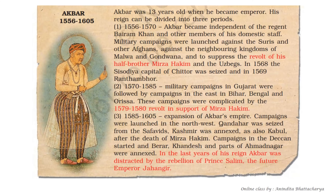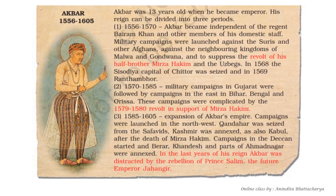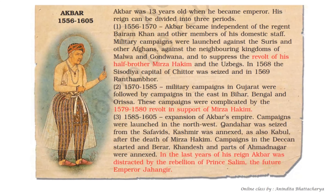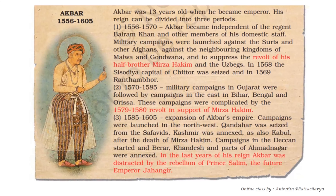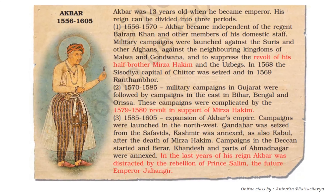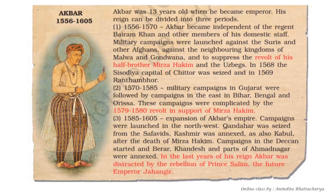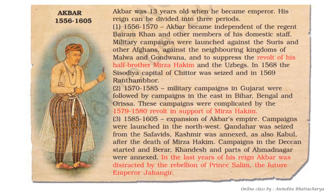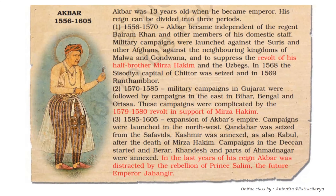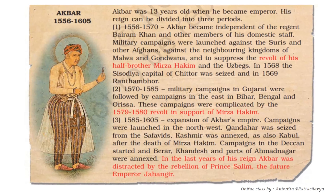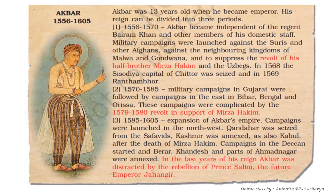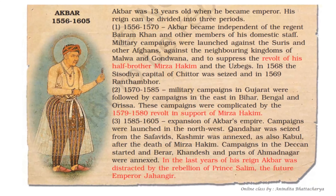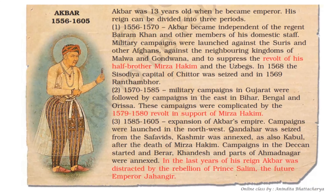Akbar was the most powerful and famous emperor of the Mughal Empire. He was only 13 years old when he became emperor. His era can be divided into three periods: 1556 to 1570, 1570 to 1585, and 1585 to 1605. During 1556 to 1570, under the guidance of Bairam Khan and other members of his domestic staff, many military campaigns were launched against the Suris, Afghans, and neighboring kingdoms like Malwa and Gondwana.